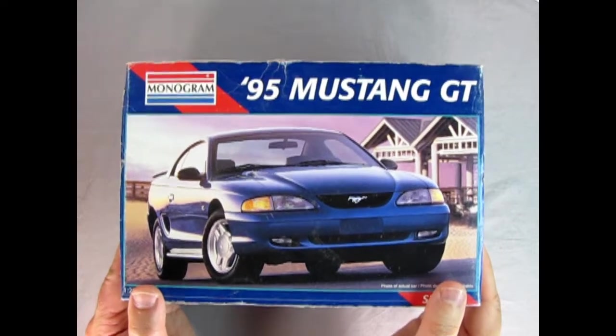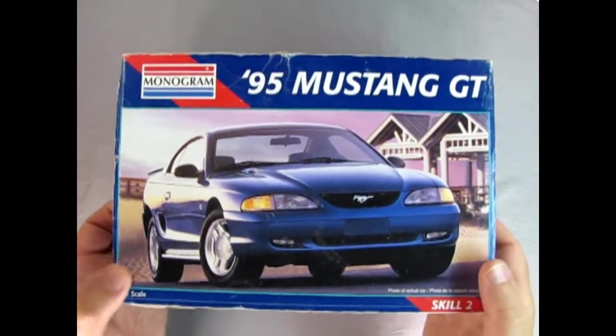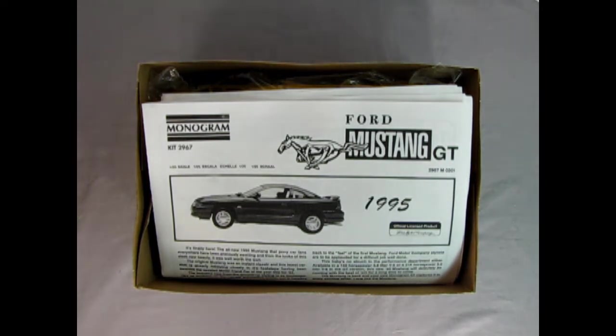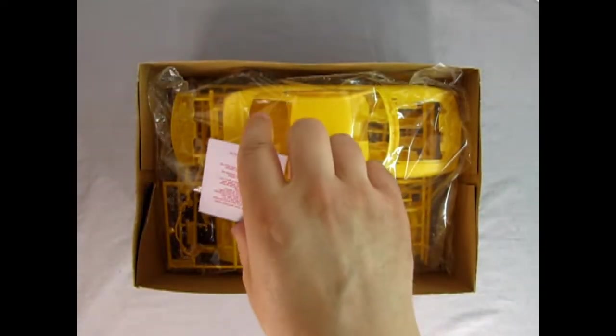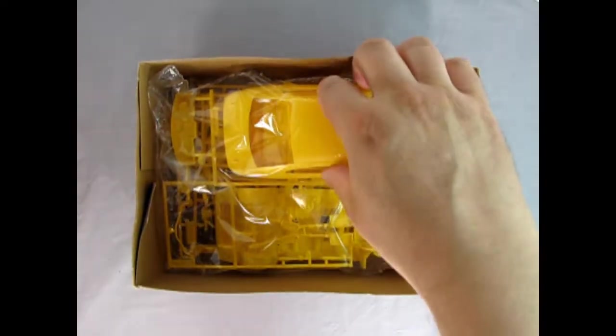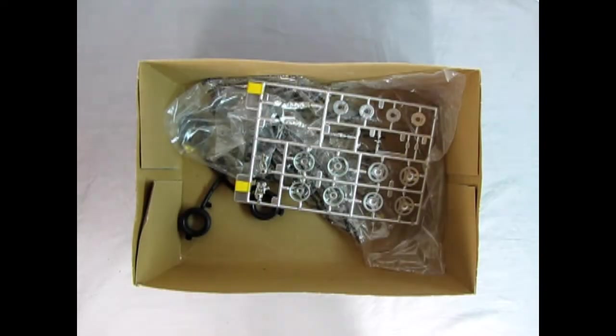Now let's open up the lid on our '95 Mustang GT. We've got our '95 instruction sheet right there as well as our decal sheet. And then here we've got our model molded in yellow plastic. Thank goodness they put that warning sticker on there.